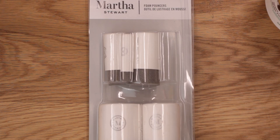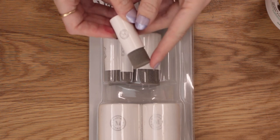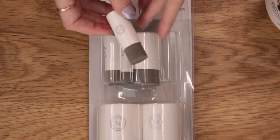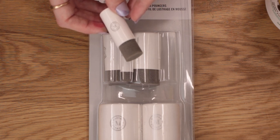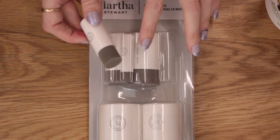What I'm using today are the Martha Stewart foam pouncers. These are fantastic for applying etching cream. You can also use a lollipop stick. There are lots of people that swear by that and also brushes as well. I really like using these.